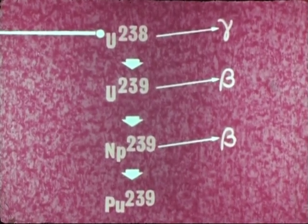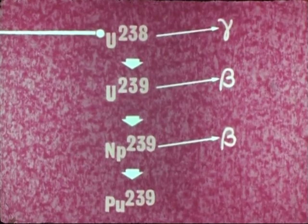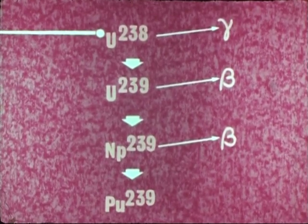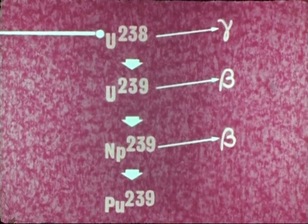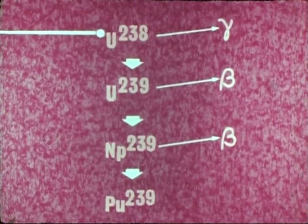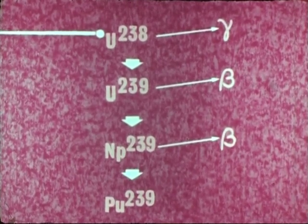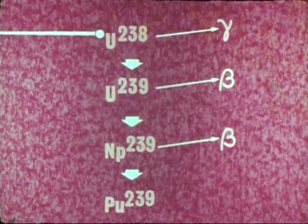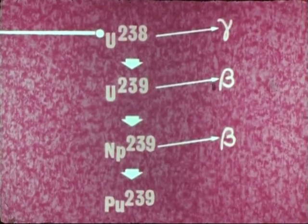Uranium-238 is very common. There is approximately 140 times as much as uranium-235. And the possibility of converting this into an almost limitless supply of nuclear fuel is one of the most promising avenues of reactor development.